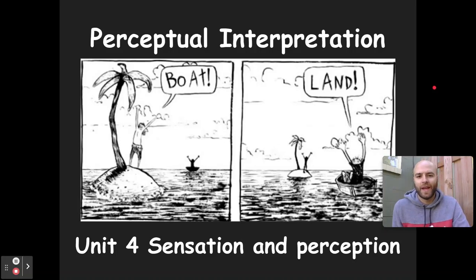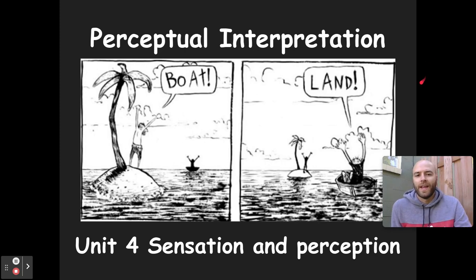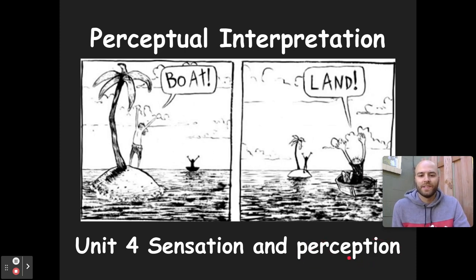Welcome back, AP Psych. This is our fifth video on unit four, sensation and perception. We finished going over all of our senses and the way we bring in physical stimuli and information. Now we're getting into the perception piece — how we interpret and organize that stimuli as it comes into our body so that we can perceive and understand the world around us.